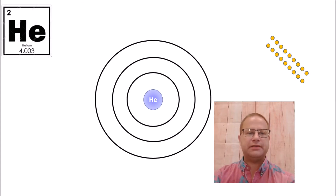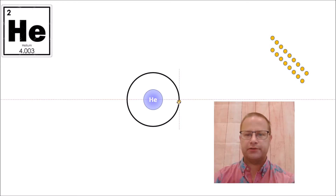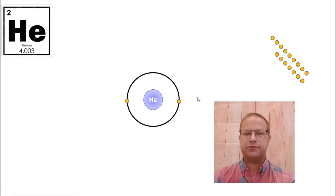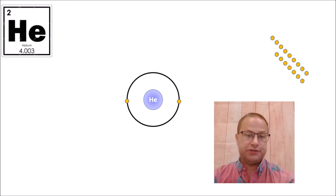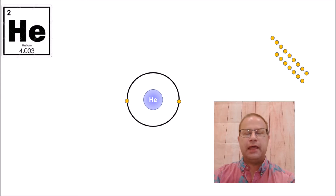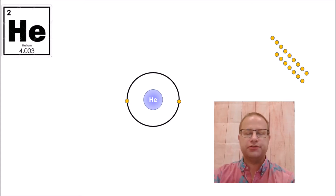Now let's take a look at helium. Helium has an atomic number of two, so it has two electrons, and we can fit two electrons in that first shell. We put an electron there and another electron there. Helium has two protons in the nucleus and two electrons occupying that first shell. Is helium happy? Yes, absolutely — helium is stable. It has two electrons in the first shell, which is its outer or valence shell. Helium is one of the noble gases, very stable and very unlikely to form molecules or compounds with other atoms.